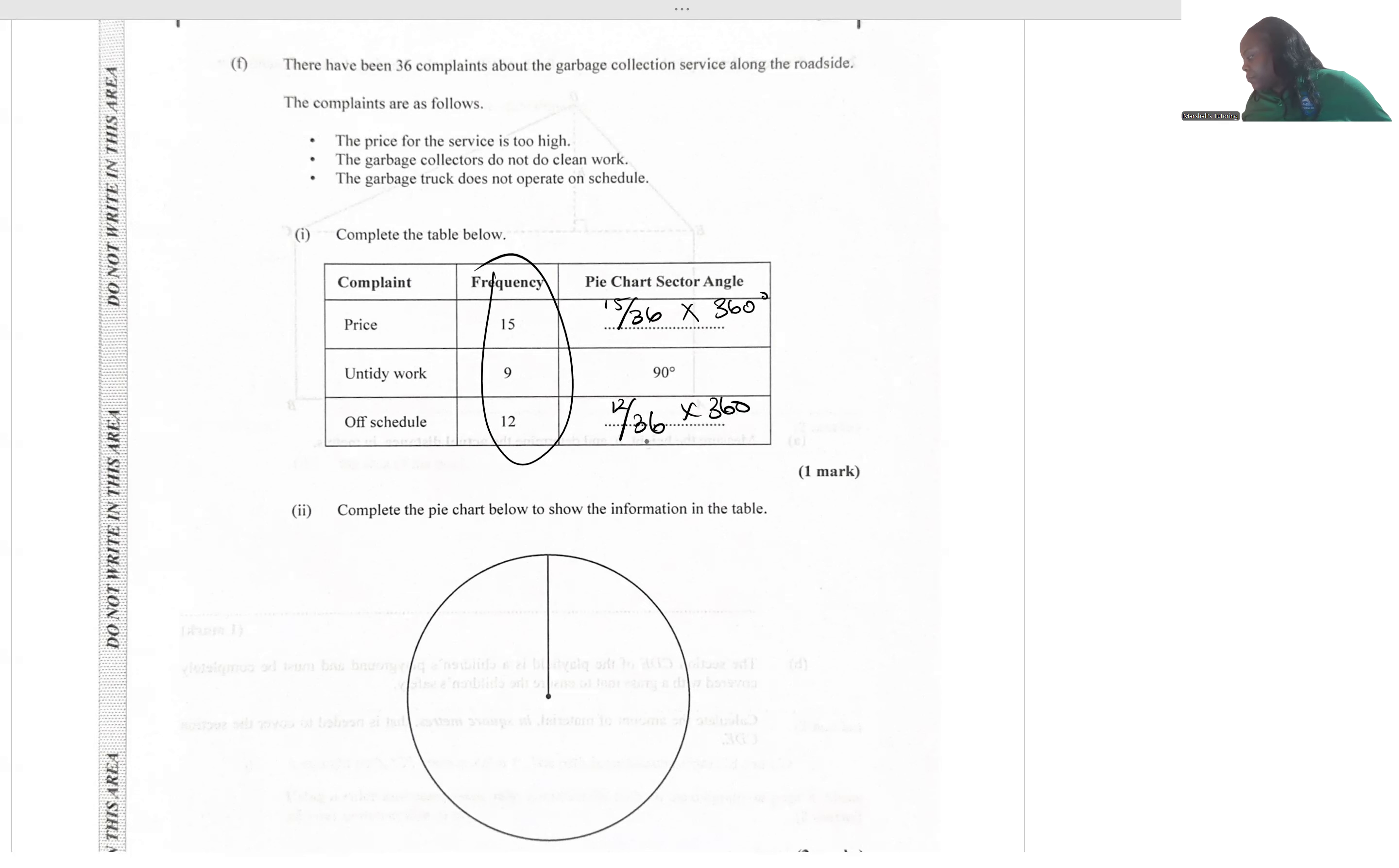So we have 150 degrees here. 12 out of 36 gives us 120 degrees here. Of course, if you add up all three angles, you're supposed to get about 360 degrees.